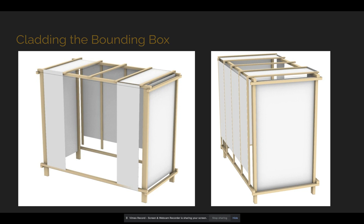Next up is cladding the bounding box. This was interesting for me because I wanted the cladding to accomplish three different things: one, showcasing the hand itself; two, I wanted the cladding to tie in with the design of the bounding box and not take away from that; and three, create different effects when light is shone onto the hand itself.